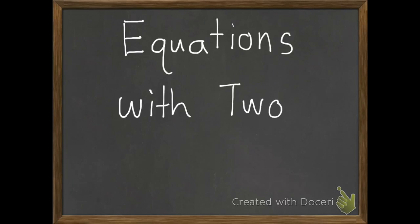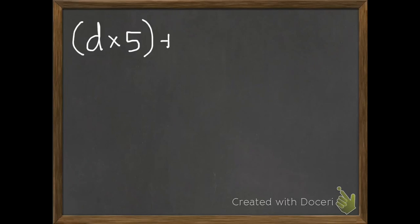Today's lesson is on equations with two operations. Here's our equation. We have in parentheses d times 5 plus 7 equals y.